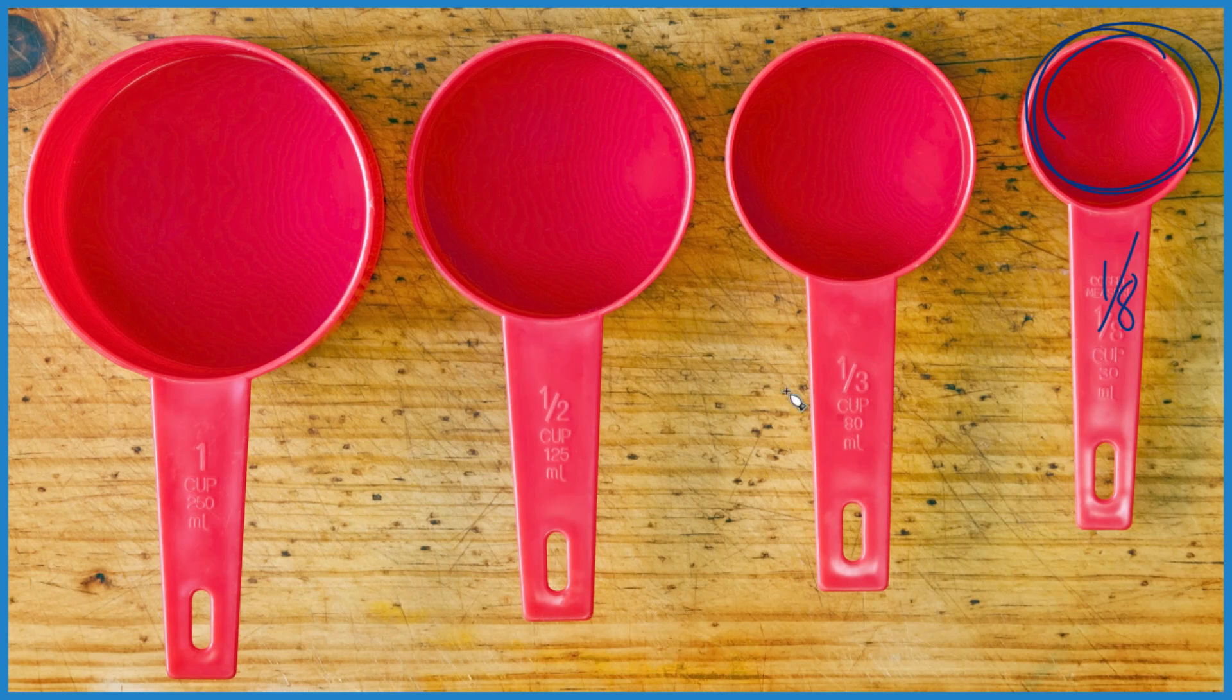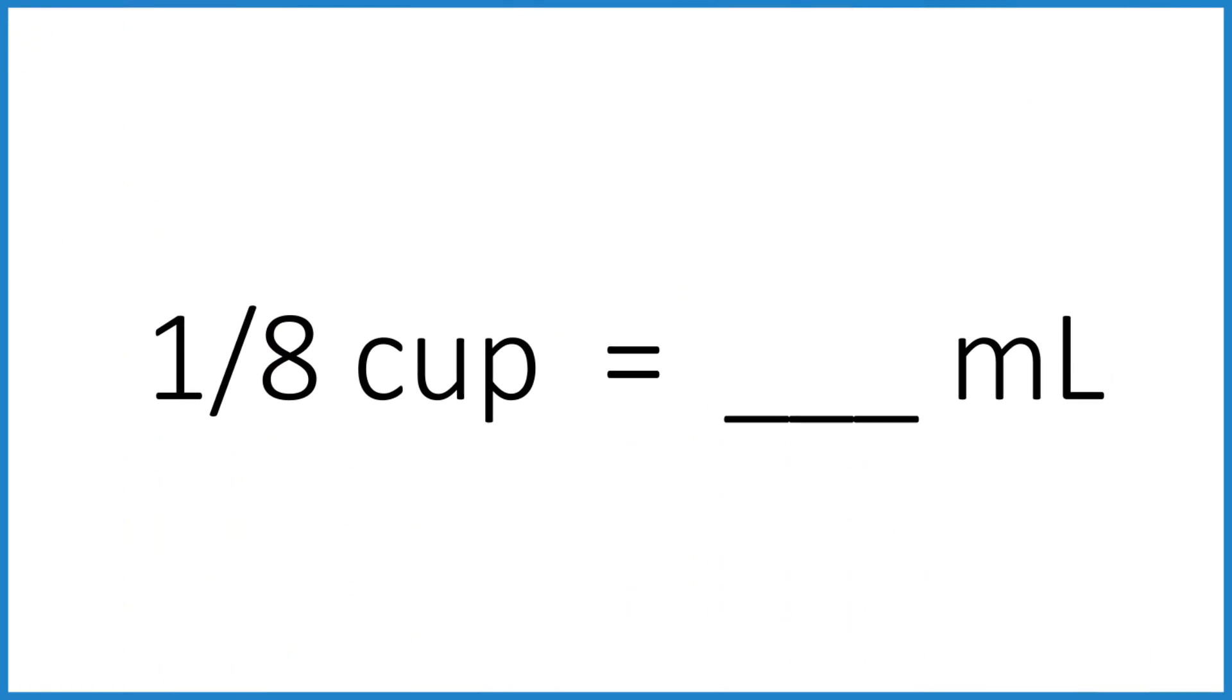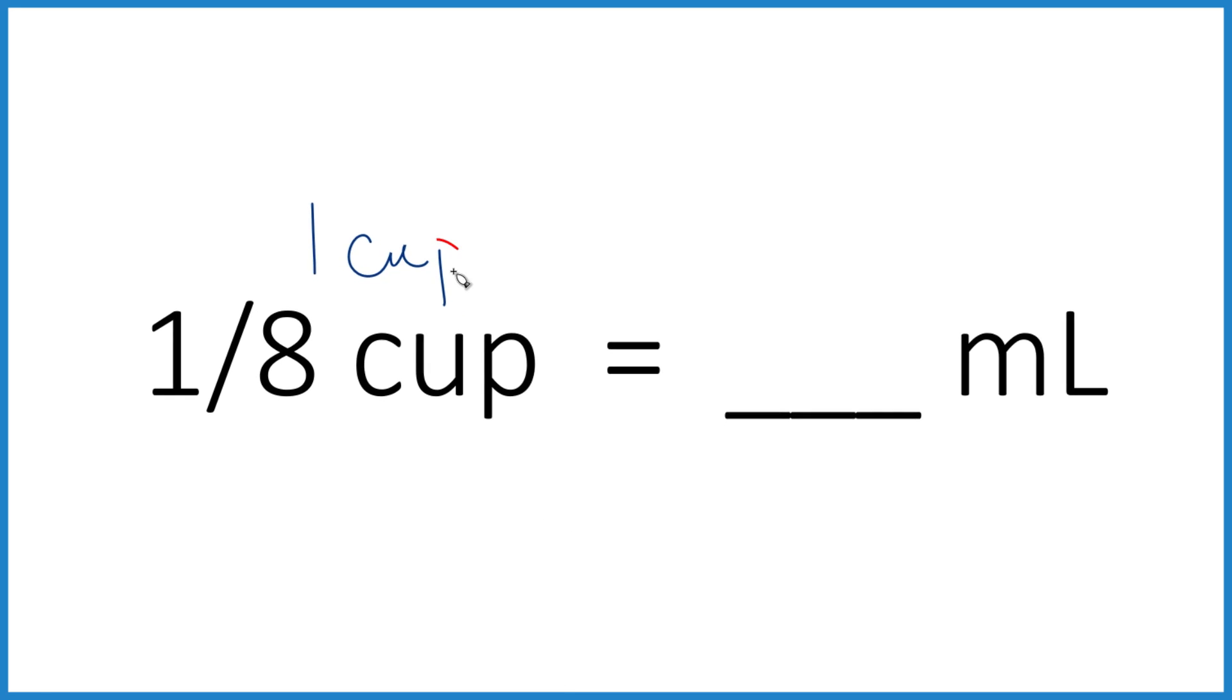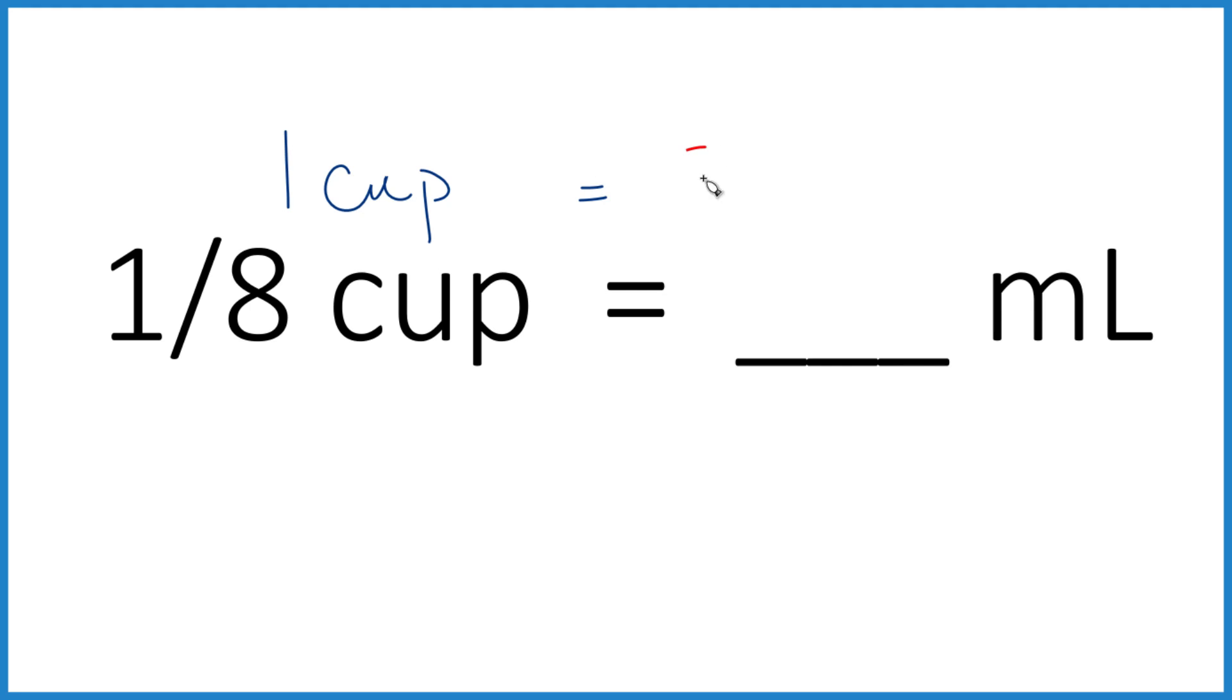So here's how we do it. We have our 1 eighth of a cup and we want to know how many milliliters. What we need to know is that one cup equals 240 milliliters. This is a little bit rounded. This is normally what's used in U.S. recipes when you're baking.